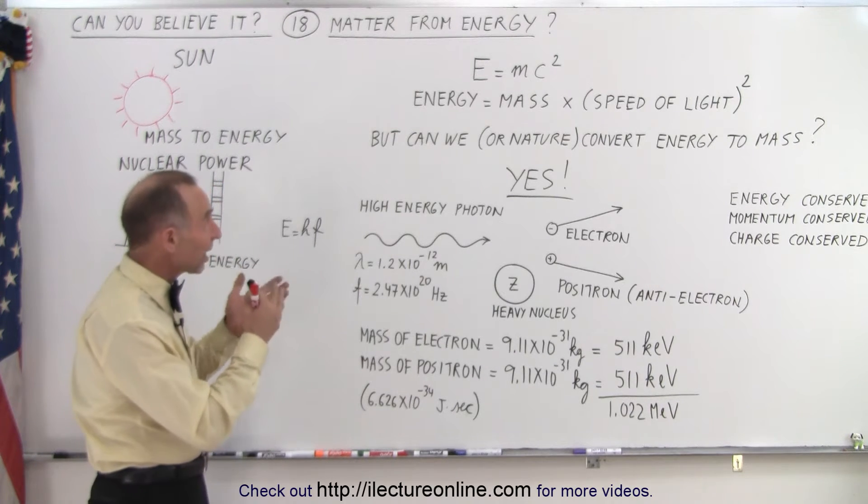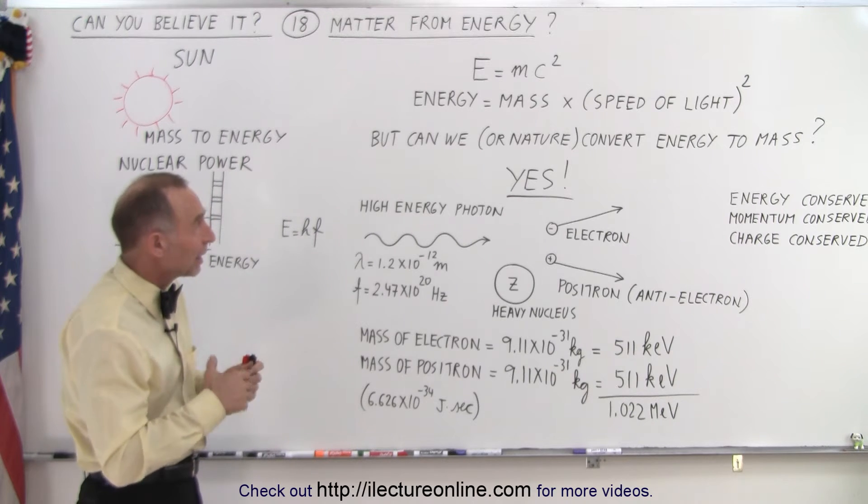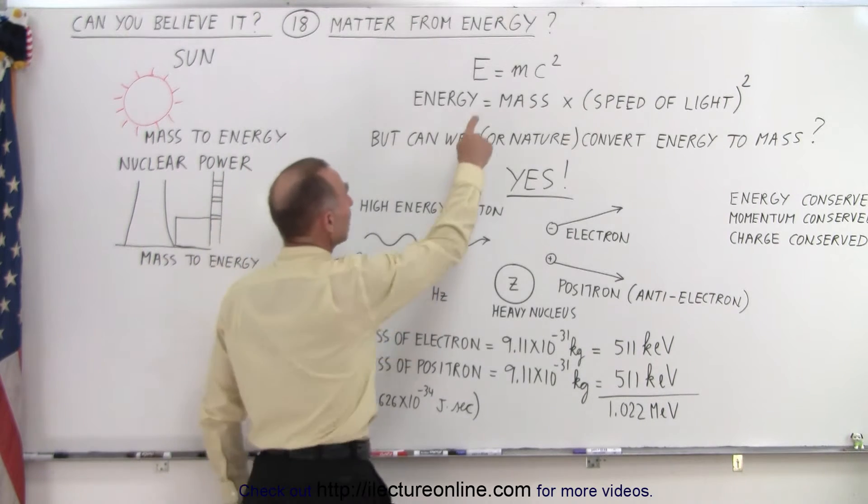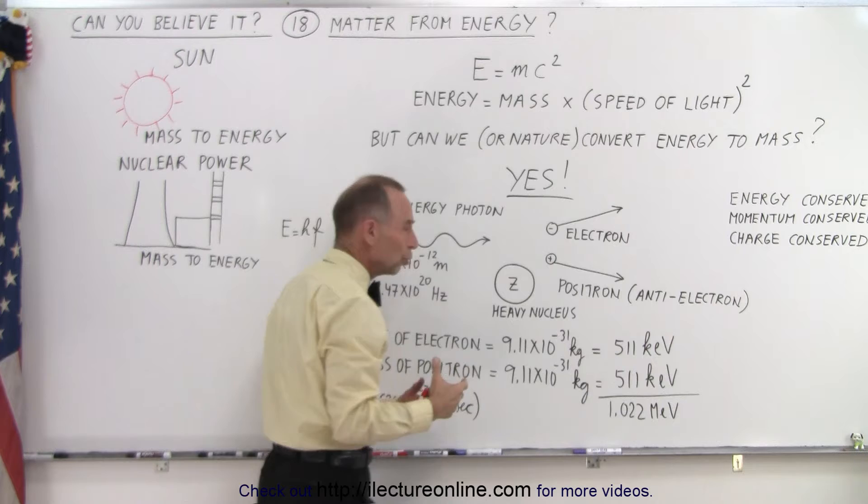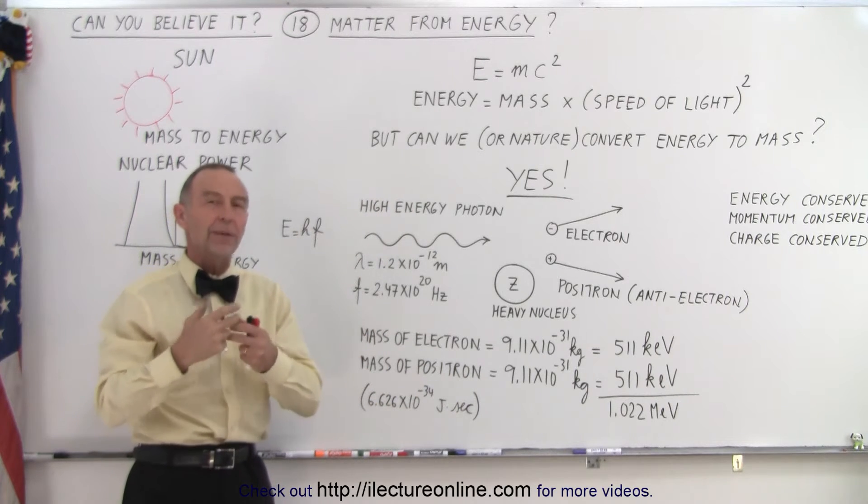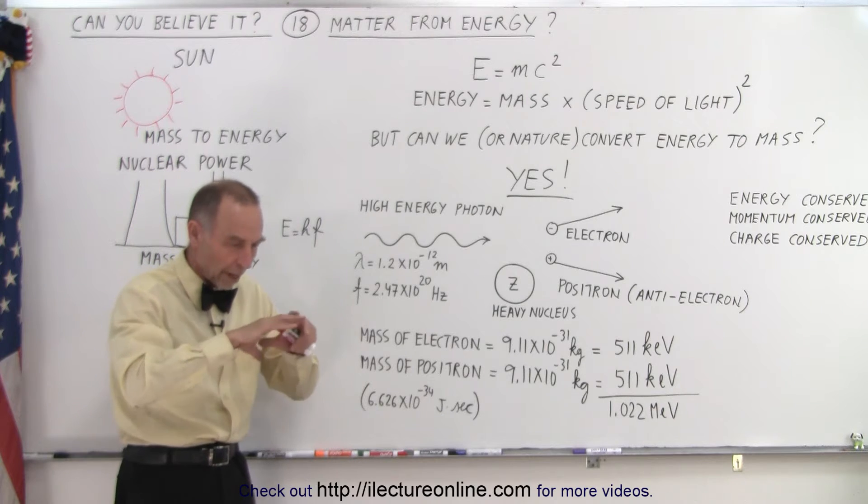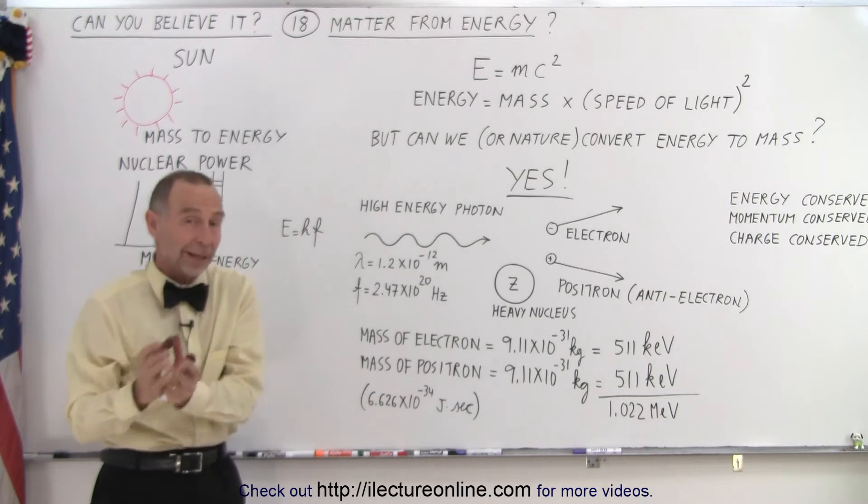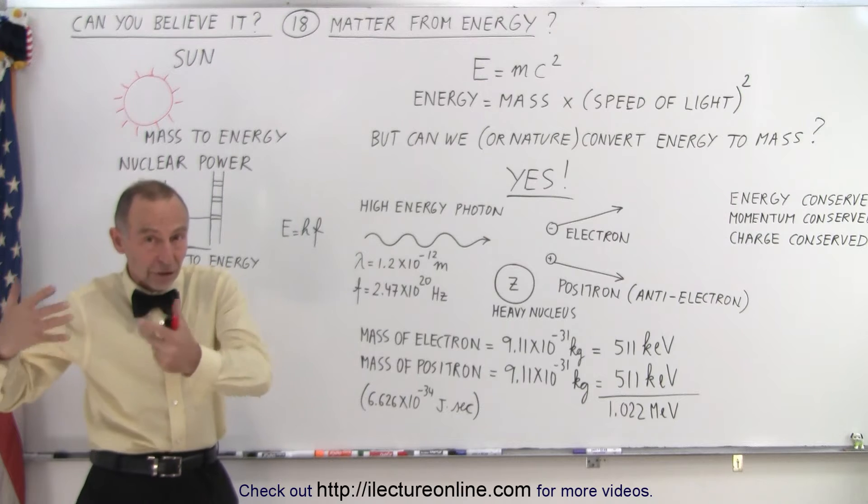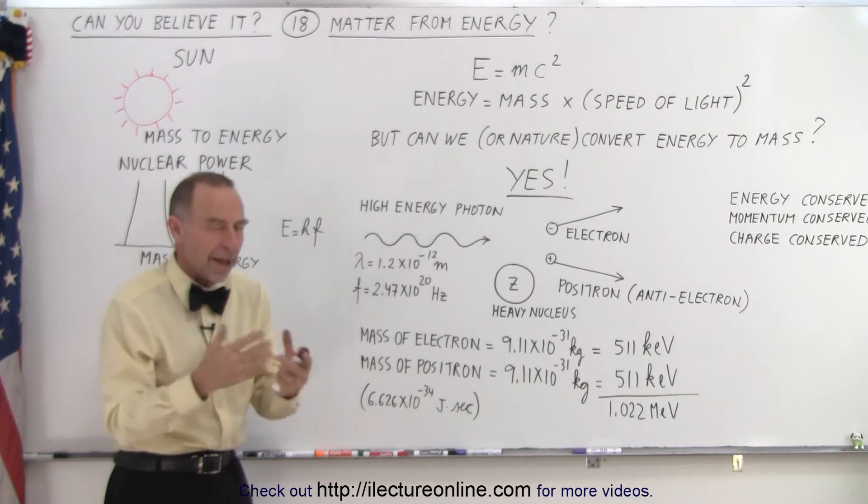So when Einstein came up with his equation, he envisioned that energy and matter were two different manifestations of the same thing in nature, and that you could readily go from one form to the other. So an object that has mass could be converted to energy, and something that is energy could be converted back to mass.